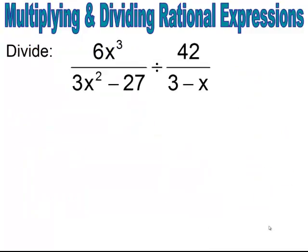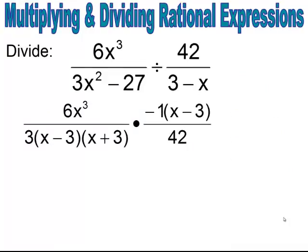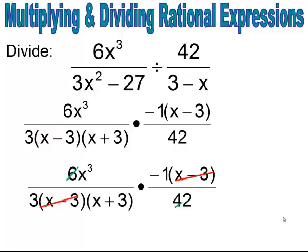Pause and try. When you factor, you should get 3 times x minus 3 times x plus 3 in the denominator of the first rational expression. Flip the second rational expression and change it to multiplication. I changed 3 minus x by pulling out a negative 1, getting negative 1 times x minus 3. After simplifying — reducing common factors and multiplying across — your answer should be negative x to the third all over 21 times x plus 3.